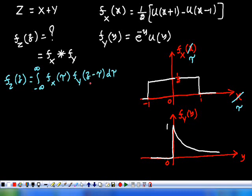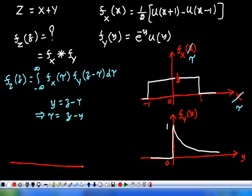We have f_Y(y). To get f_Y(z - τ), substitute y = z - τ into f_Y(y), which gives τ = z - y. Now plot f_Y(z - τ) on the τ-axis: when y = 0, τ = z, so the curve starts at τ = z with value 1.